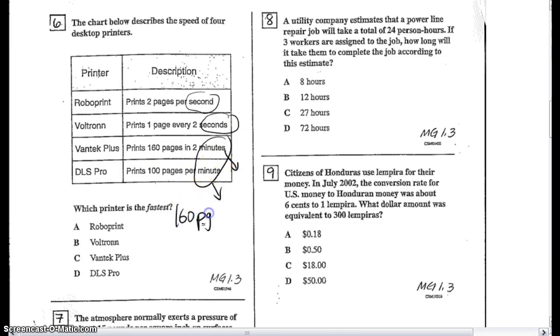So if I have 160 pages in two minutes, well, two minutes is the same as two minutes times 60 seconds in a minute. So two times 60 is 120 seconds. So I'm going to divide 160 by 120. And that will give me 1.3 repeating pages per second. 1.3. Well, right now, between RoboPrint and Voltron, Voltron is printing one page every two seconds, which means it only prints half a page per one second, which is definitely not as fast as two pages per second. So we're going to cross out that one.